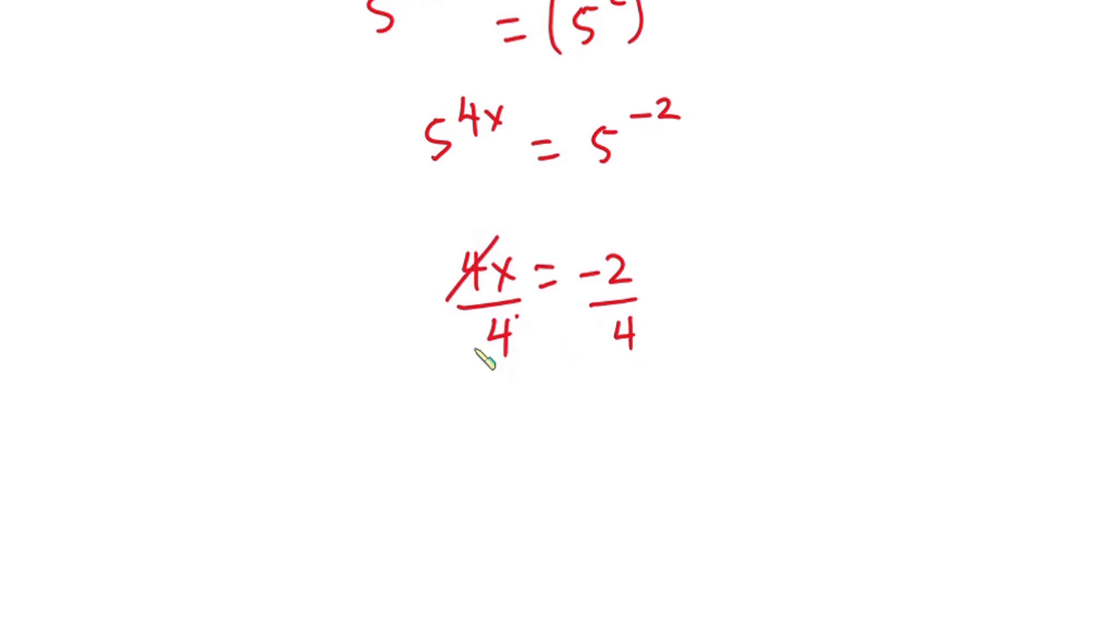Now since we are looking for x, let's divide each side of this equation by 4 so that this 4 cancels this. Now we have x is equal to 2 goes into 2 one time, and then goes into 4 two times. Now we have negative 1 over 2.